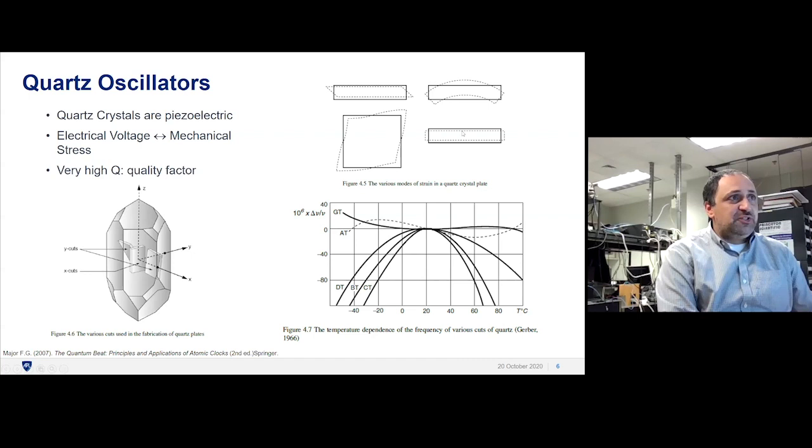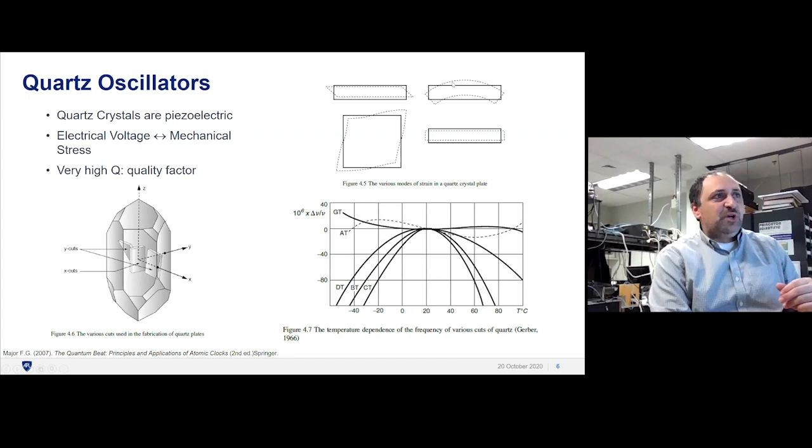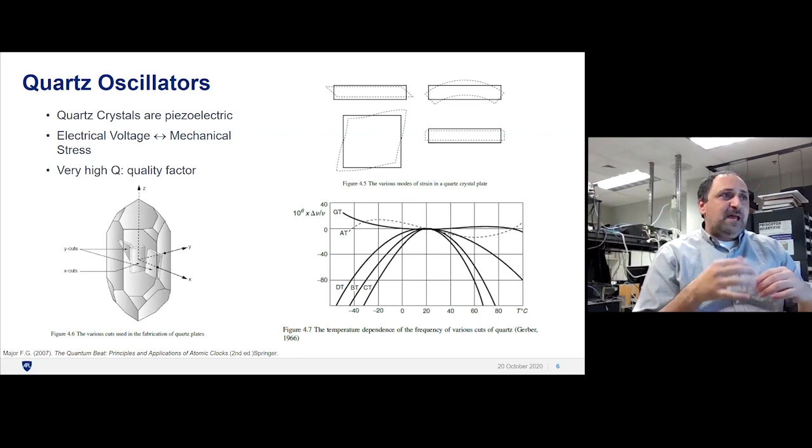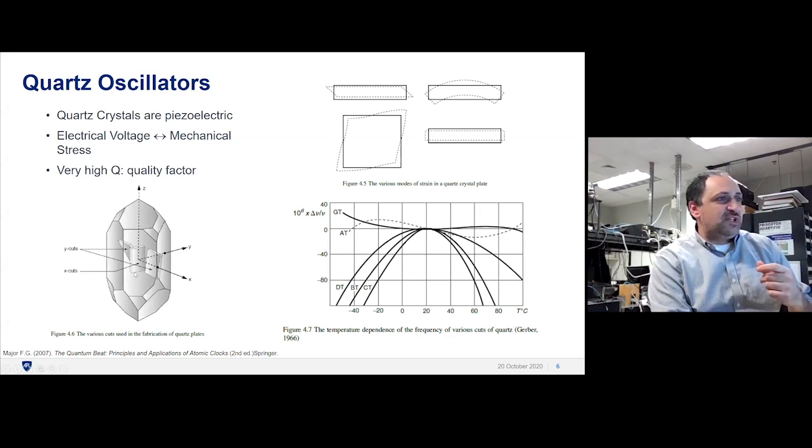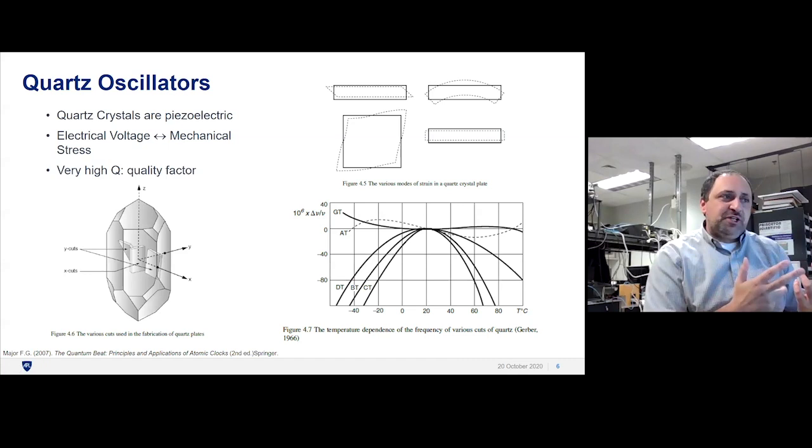There are different ways that you can oscillate quartz. You squeeze it, it expands. In this way you can bend it, or push it on the edge and it moves like that. All these different ways of how you excite the quartz, and also how you cut the quartz out of the crystal, defines its quality as a resonator.